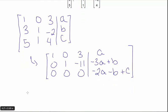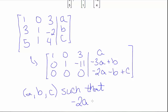So the span here is all vectors [a, b, c] such that -2a - b plus c is equal to 0. We would need this to be equal to 0 in order to have a solution. If this is anything but 0, no solution would exist.